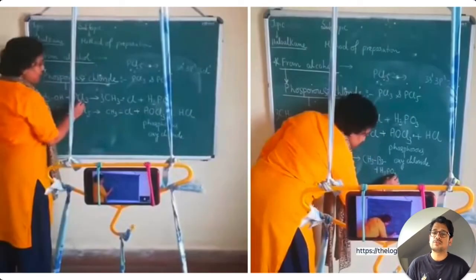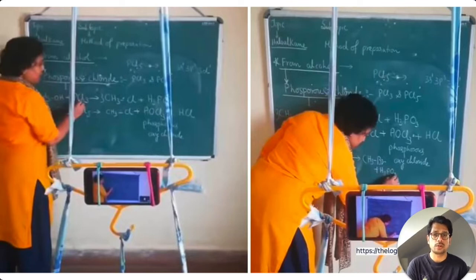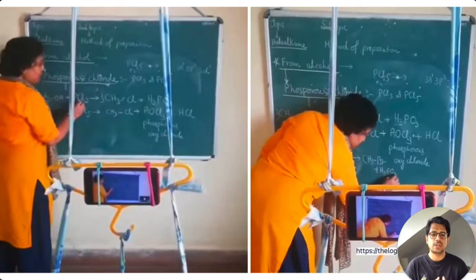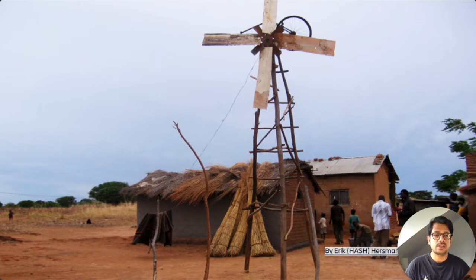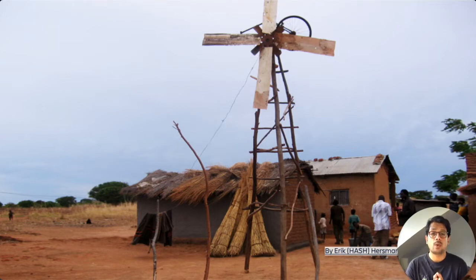Or how Momita B., a chemistry teacher from Pune in India, used everyday things lying around the house to create a setup to stream her classes online when schools were closed due to the lockdowns. But Jugaad can also be bigger innovations that bring lasting changes in communities and people's lives. For instance, how a boy named William Kamkwamba from Malawi built a wind turbine to power multiple electrical appliances in his family's house when he was only 14, using blue gum trees, bicycle parts and materials collected from a local scrapyard. He then went on to build a solar-powered water pump to bring drinking water to his famine-ridden village.